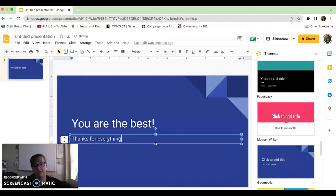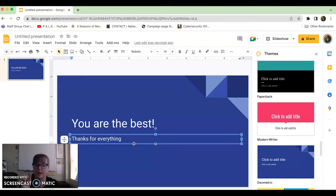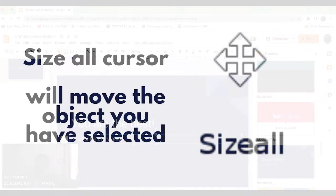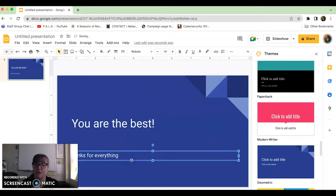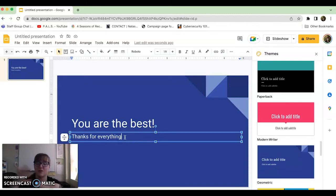We're going to type 'You're the best, thanks for everything.' To type in these boxes, you need to hover until you get a cursor that's a blinking line — that means you can type. These boxes can get frustrating because sometimes you'll see four arrows in all directions, meaning you can move the whole box. It's great for organizing, but it also means that sometimes when you're trying to click in to type, you can start moving things around.